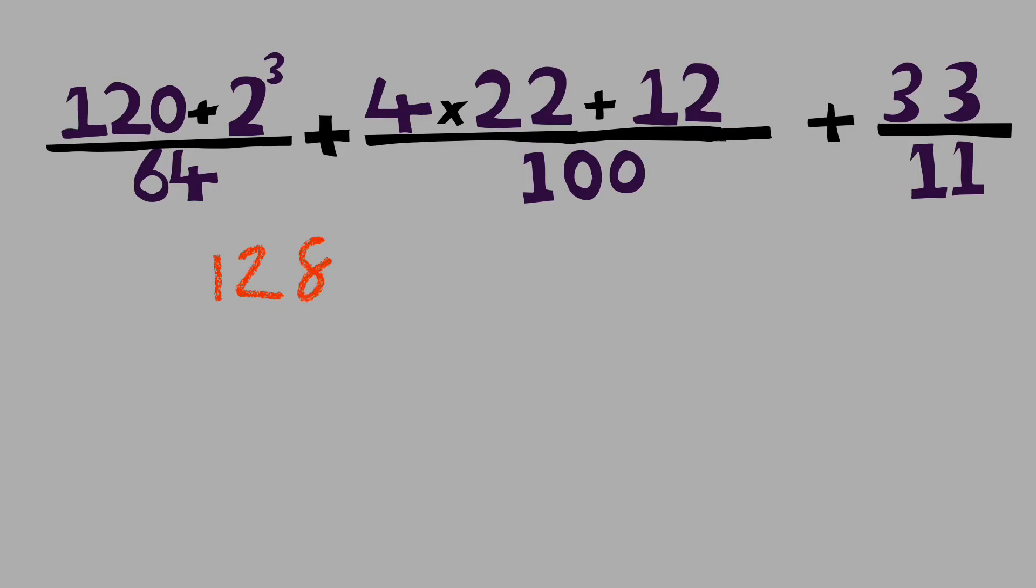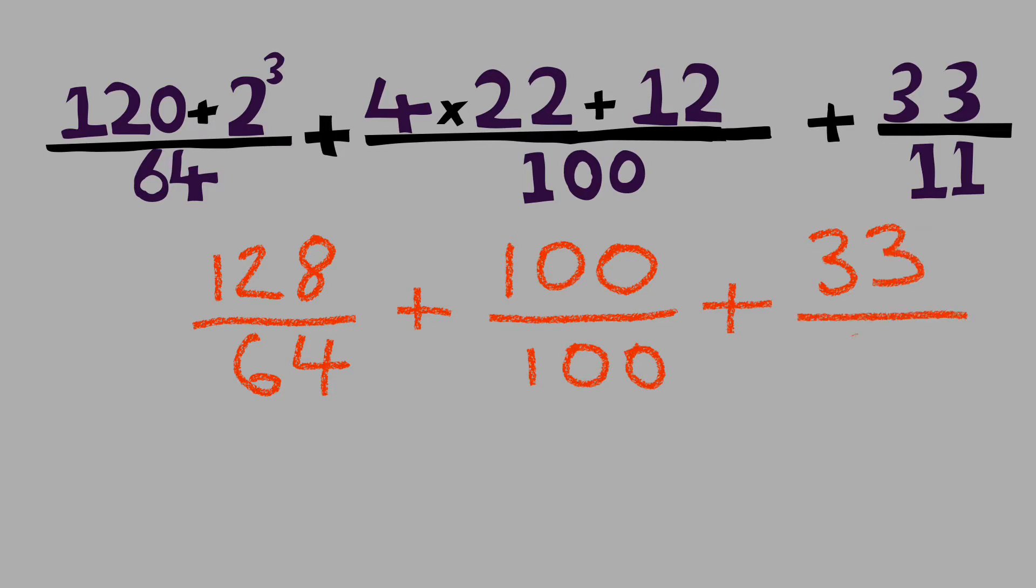This question looks much harder than it actually is. So 120 plus 2 cubed, or 2 to the power of 3, is 128, and that's over 64. Then in the middle, 4 times 22 plus 12 equals 100, and that's going to be on top, and then 100 is going to be on the bottom, so 100 over 100, plus 33 over 11. Now if you remember your maths, that there actually means a division sign.